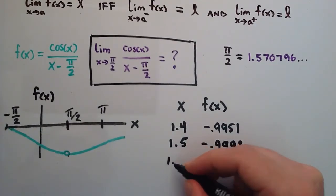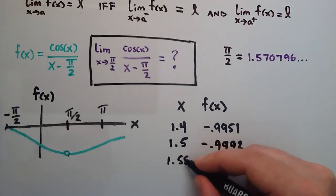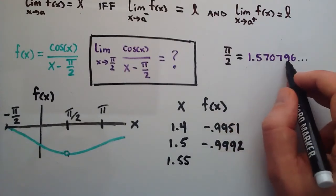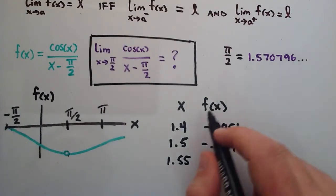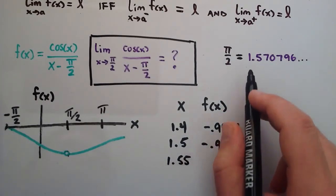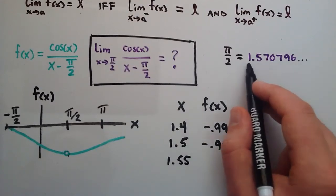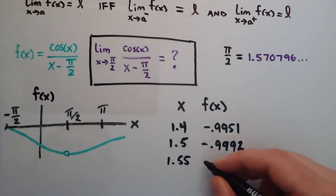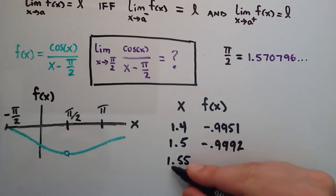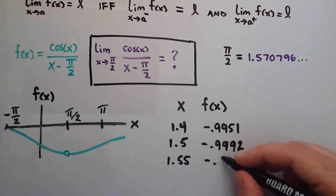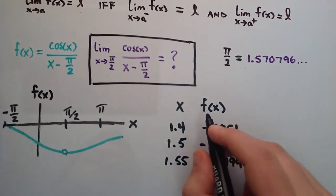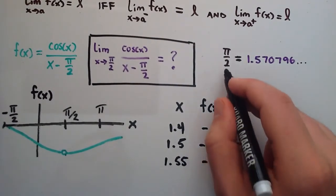Going a little bit closer to x equals 1.55 — and note that pi over 2 is equal to 1.570796, so we're approaching that number. 1.55 is getting really close to pi over 2 from the left-hand side. Carrying that out to four decimal places, f(1.55) is equal to negative 0.9999. So approaching from the left, we're getting very close to pi over 2.